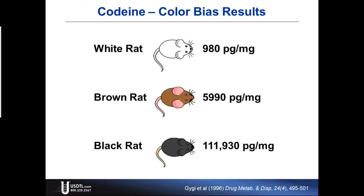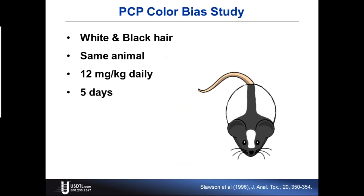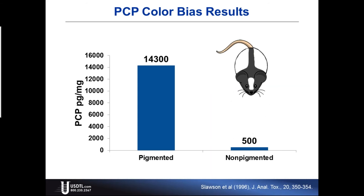Here's a second study by Slauson back in 1996. This is a unique experiment in that instead of using different animals, they used animals that had both white and black hair on the same animal. That way, each animal is taking in 12 milligrams per kilogram daily, which normalizes for any metabolism differences, feeding differences, or dosing differences. They collected hair from the non-pigmented sections and the dark pigmented sections of the same animal, and again got an incredible distribution of results — 500 versus 14,000. Just knowing that hair color makes such a big difference, and in our demographic in the U.S. we have every possible type of hair color, it's practically impossible to come up with some paradigm to say a certain number represents a certain type of usage.